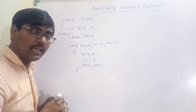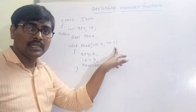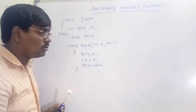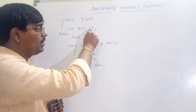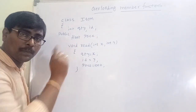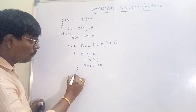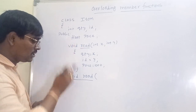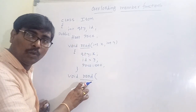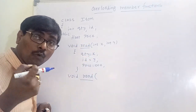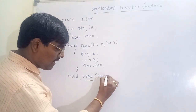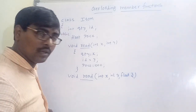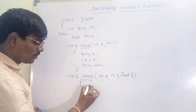Here, `read` is a member function which contains two parameters x and y. At the time of calling, x is copied into quantity and y into id, and by default price is assigned 100.0. Now observe carefully — another function also named `read`, meaning I am performing overloading. The name of both functions is the same.